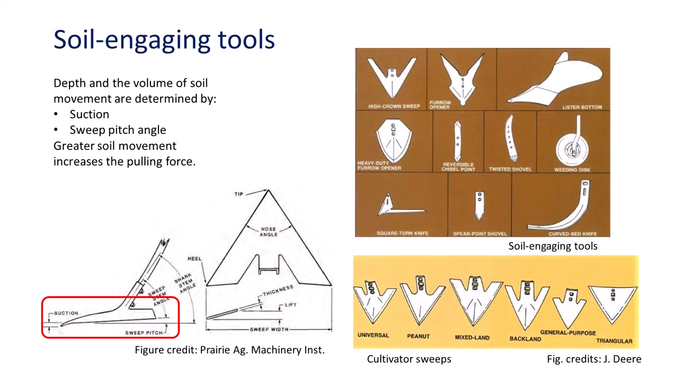Many soil-engaging tools are available to accomplish tillage and weeding objectives. The tool's design affects the depth of penetration and the amount of soil movement. The more soil cut, lifted, and thrown, the greater the pulling force required. The pitch of a sweep has a significant effect on pulling force and soil movement. A positive pitch occurs when the sweep's tip is lower than the heel. Normal sweep pitch ranges from 0 to 5 degrees when not under load; a sweep's pitch under load should be between 2 and 7 degrees.